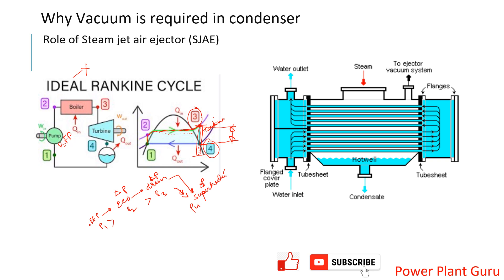If we can reduce the exhaust pressure at point 4 further down, we get that much extra work output. That is why vacuum is required. The condenser corresponds to the heat rejection process from point 4 to point 1 in the Rankine cycle — this is where condenser operation begins.